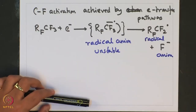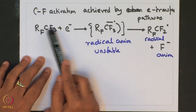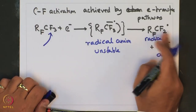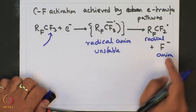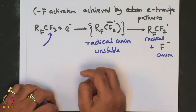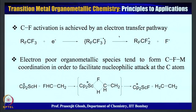In the process, the CF bond in RF-CF3 has been cleaved to give CF2 and F. That is how the activation has been achieved: addition of an electron results in formation of an unstable radical anion, which stabilizes itself by decomposing to give a radical species and an anionic species, thereby achieving CF bond activation.